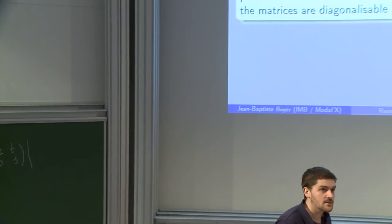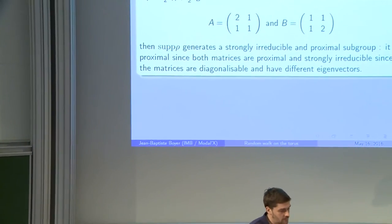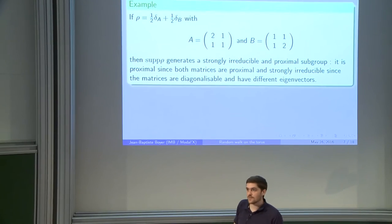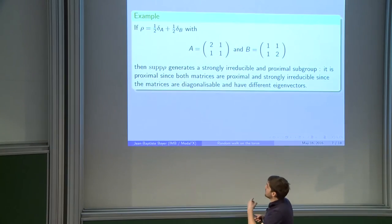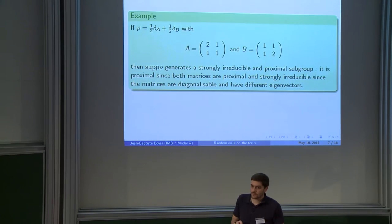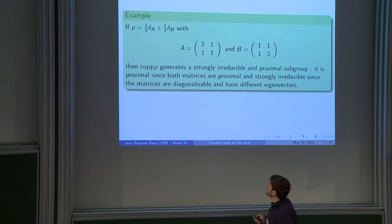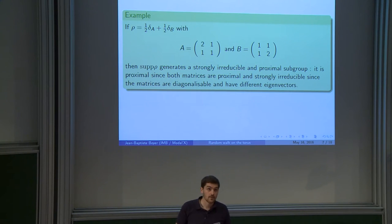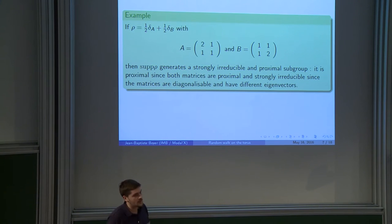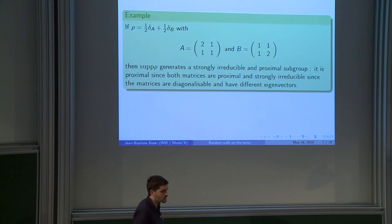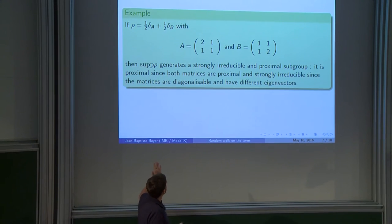So my assumptions are on the support of the measure, but more specifically on the group that it generates. So it is not an assumption about the cardinal of the support. As an example, these two matrices, A and B, generate a strongly irreducible and proximal subgroup of SL₂(R). It is true because each of them has eigenvalues whose modulus is not equal to 1 and their eigenvectors are not the same.